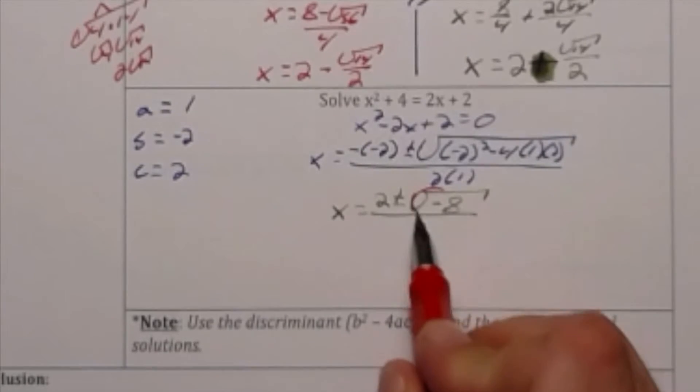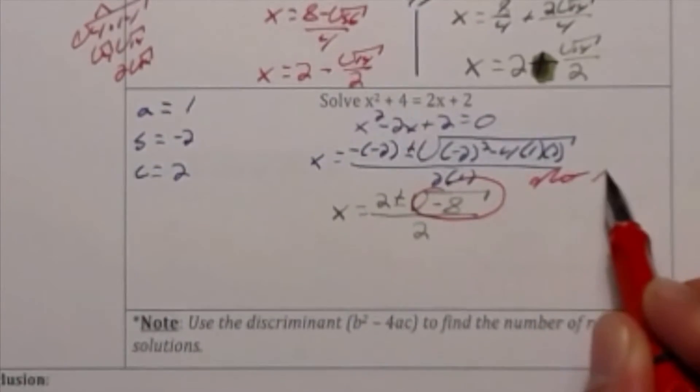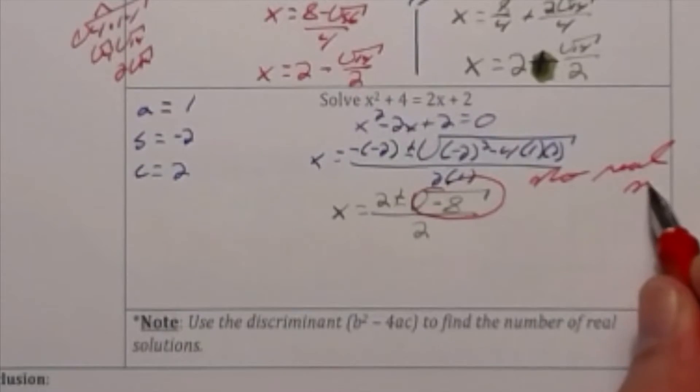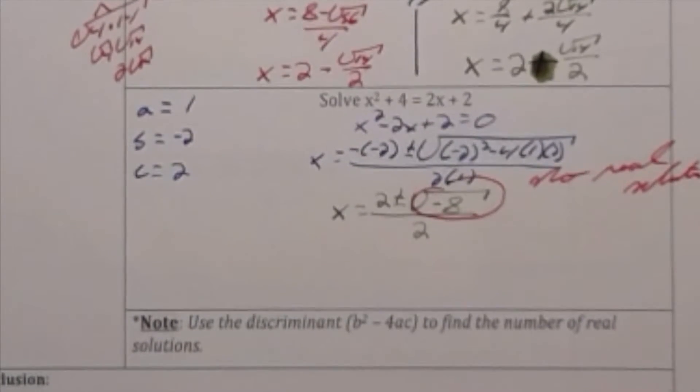Having a negative radicand means that there is no real solution, although there are actually solutions we can find. And these solutions are imaginary.